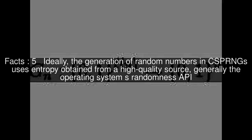Ideally, the generation of random numbers in CSPRNGs uses entropy obtained from a high-quality source, generally the operating system's randomness API. However, unexpected correlations have been found in several such ostensibly independent processes.